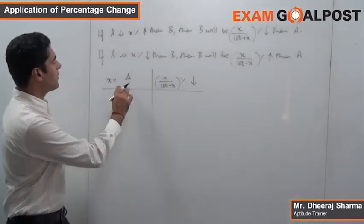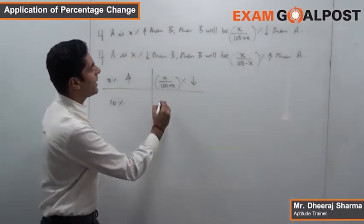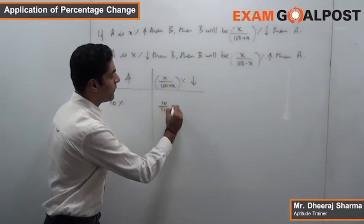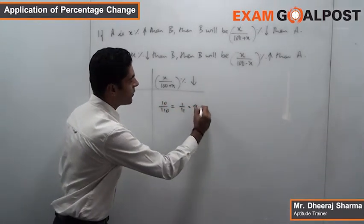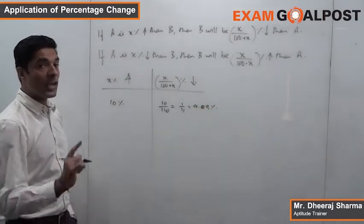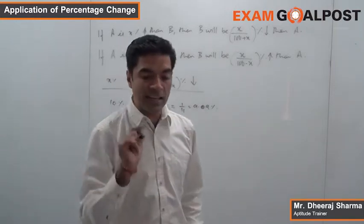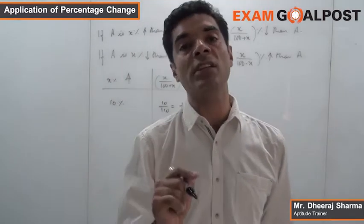So in case there is an increase of 10 percent, or A is 10 percent more than B, then B will be 10/110. If you remember that 1/11 is 9.09 percent, then this comes out to be a decrease of 9.09 percent. I am not asking you to do it for all the percentages, but what I am trying to tell you is that at least do it for commonly asked percentages.